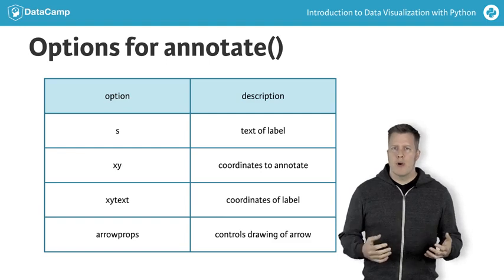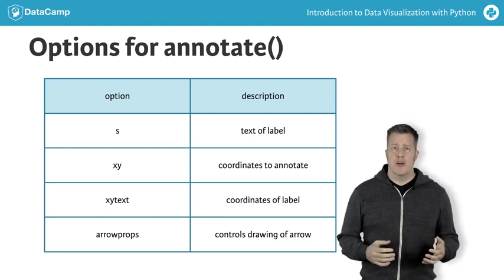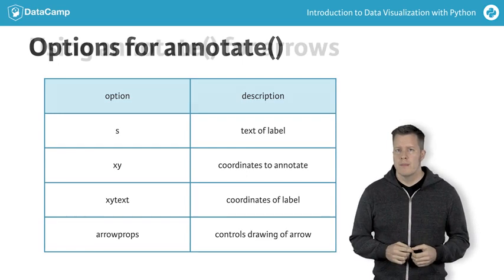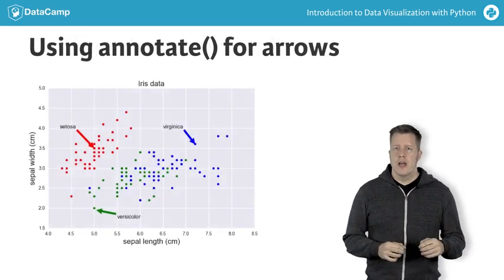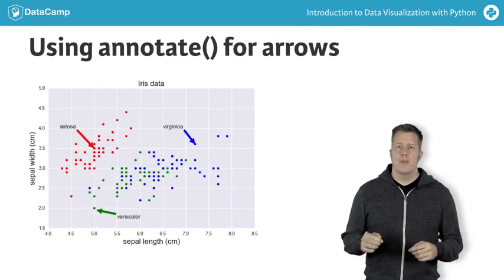To draw the arrow, the keyword arrow props needs to be specified by a dictionary with the arrow's properties. And here's the same figure, this time drawing arrows from the text labels to the points being annotated.